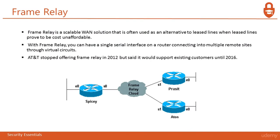Next is Frame Relay. Frame Relay is a scalable WAN solution often used as an alternative to a leased line when leased lines prove unaffordable. With Frame Relay, you can have a single serial interface on a router connecting into multiple remote sites through virtual circuits. AT&T stopped offering Frame Relay in 2012 but said it would support existing customers until 2016.